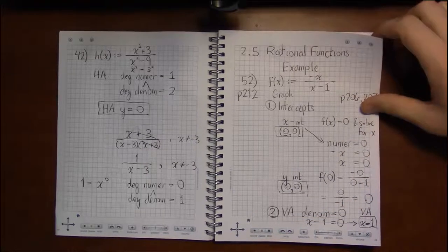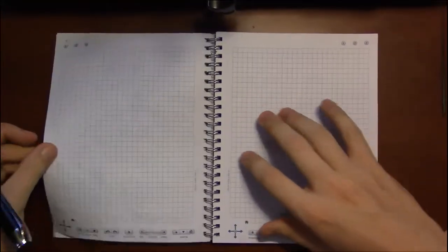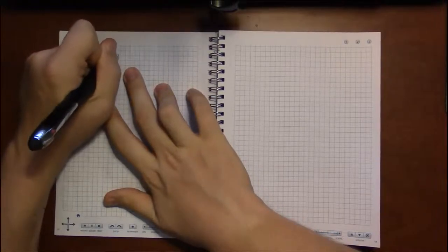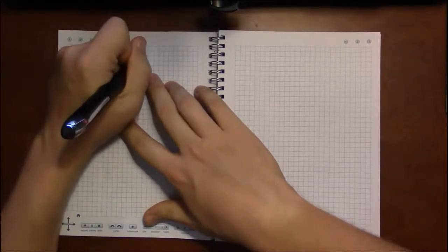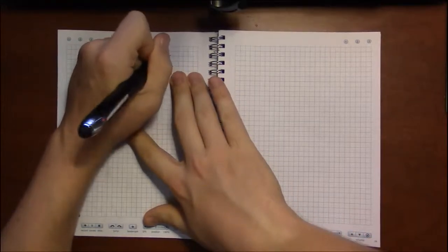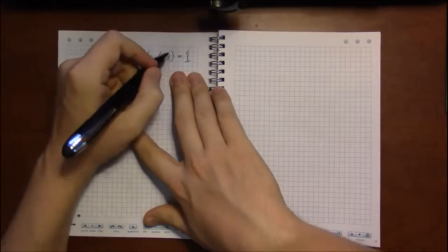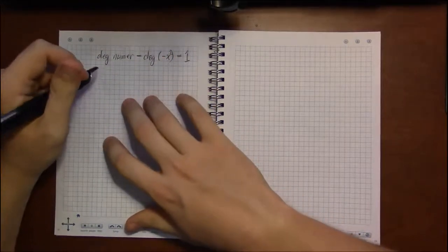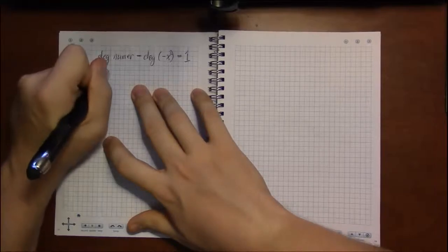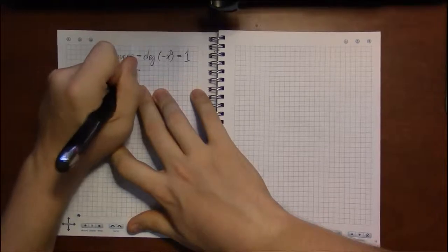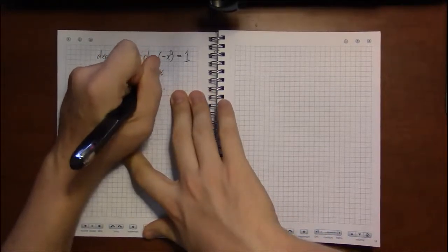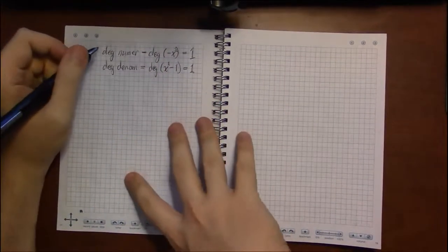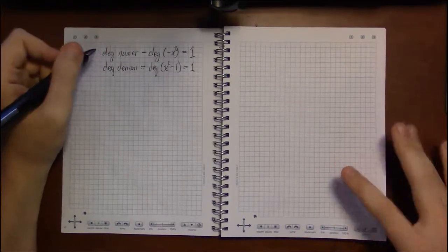Next up, we're going to try to find the horizontal asymptote. So we're going to be looking at the degree of the numerator and the degree of the denominator. Now remember, the numerator was -x. So the degree of -x is just 1, because you can always stick a 1 in that exponent for x and it won't change anything, because anything to the first is just itself. And the degree of the denominator, in this case the degree of x-1, is also 1.